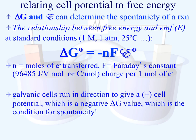We can relate cell potential to free energy. Delta G and our E value can be used to determine spontaneity. The relationship between free energy and cell potential at standard conditions is: ΔG° = −nFE°, where n is the number of moles of electrons transferred, and F is Faraday's constant, which can be expressed in joules per volt or coulombs per mole — representing the charge per one mole of electrons.